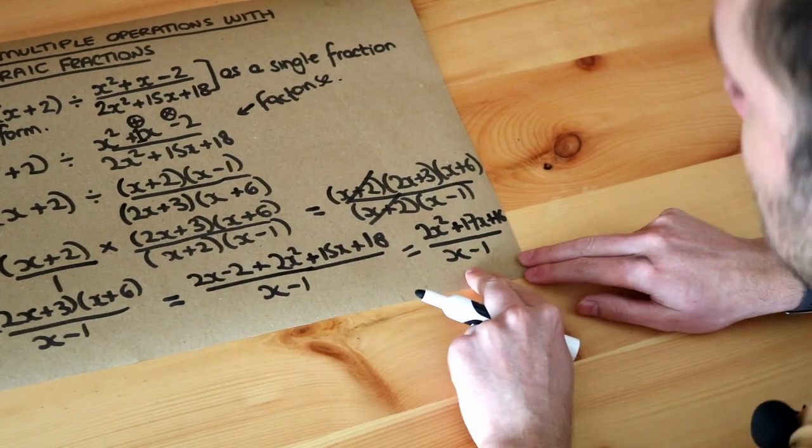And it might be that this simplifies further. So this might factorize and you might find it has a common factor of x minus 1 which would cancel with that. But in this particular case, that doesn't happen.